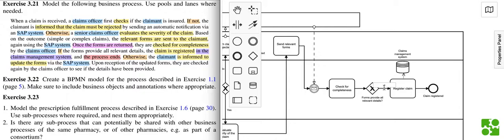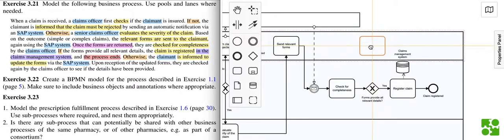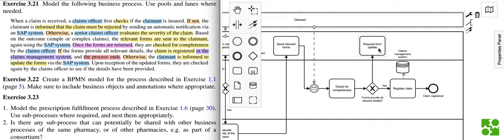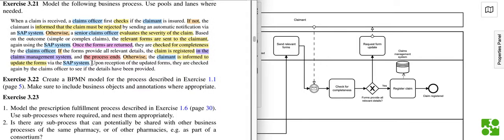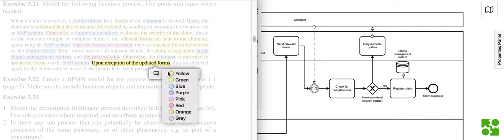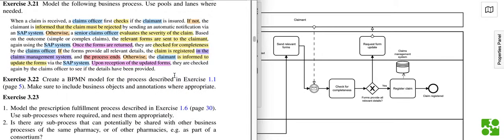If the forms are not complete, we request a form update from the claimant. Upon reception of the updated form, it seems we might have another intermediate message event here - they are checked again.